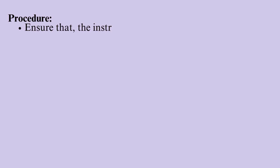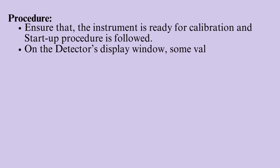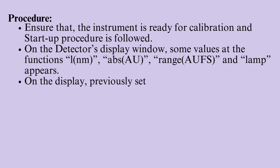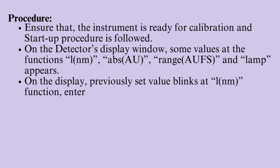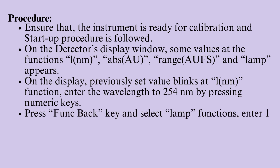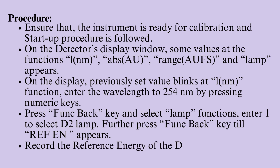Procedure: Ensure that the instrument is ready for calibration and startup procedure is followed. On the detector's display window, some values at the functions L, NM, ABS, AU, range, AUFS, and lamp appear on the display. The previously set value blinks at L, NM. Enter the wavelength to 254 nm by pressing numeric keys. Press the FUNK BACK key and select lamp functions. Enter 1 to select D2 lamp. Further press FUNK BACK key till REF EN appears. Record the reference energy of the D2 lamp at 254 nm in the calibration log.